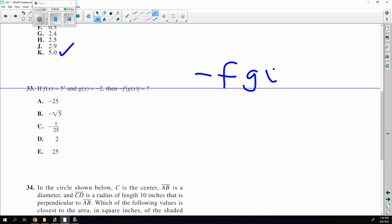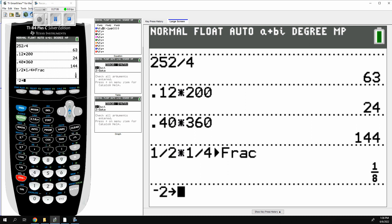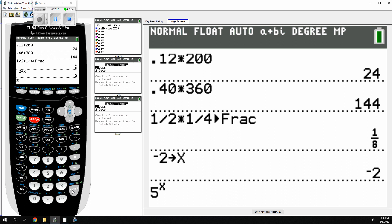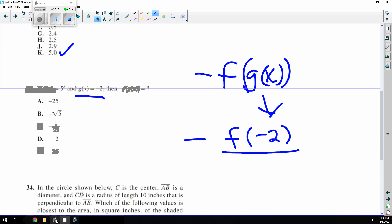The negative of f of g of x. Well, g of x is told to me to be negative 2. So now I'm going to f of negative 2, which means negative 2 stow x of 5 to the power of x, math afrac, will give me the answer 1 over 25. And then the negative just stays there quietly. And that's it.